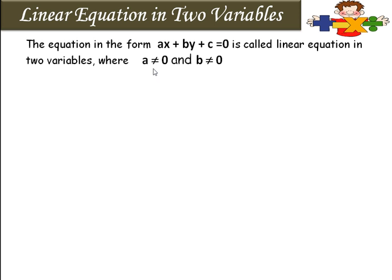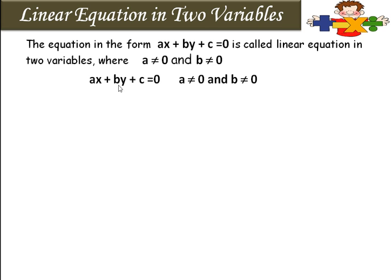Here the value of a and b will not equal to 0. Because if you put 0 here, it will become 0 is equal to 0, and c is a constant term, so that will not be a linear equation. Here ax plus by plus c is equal to 0 is a linear equation.